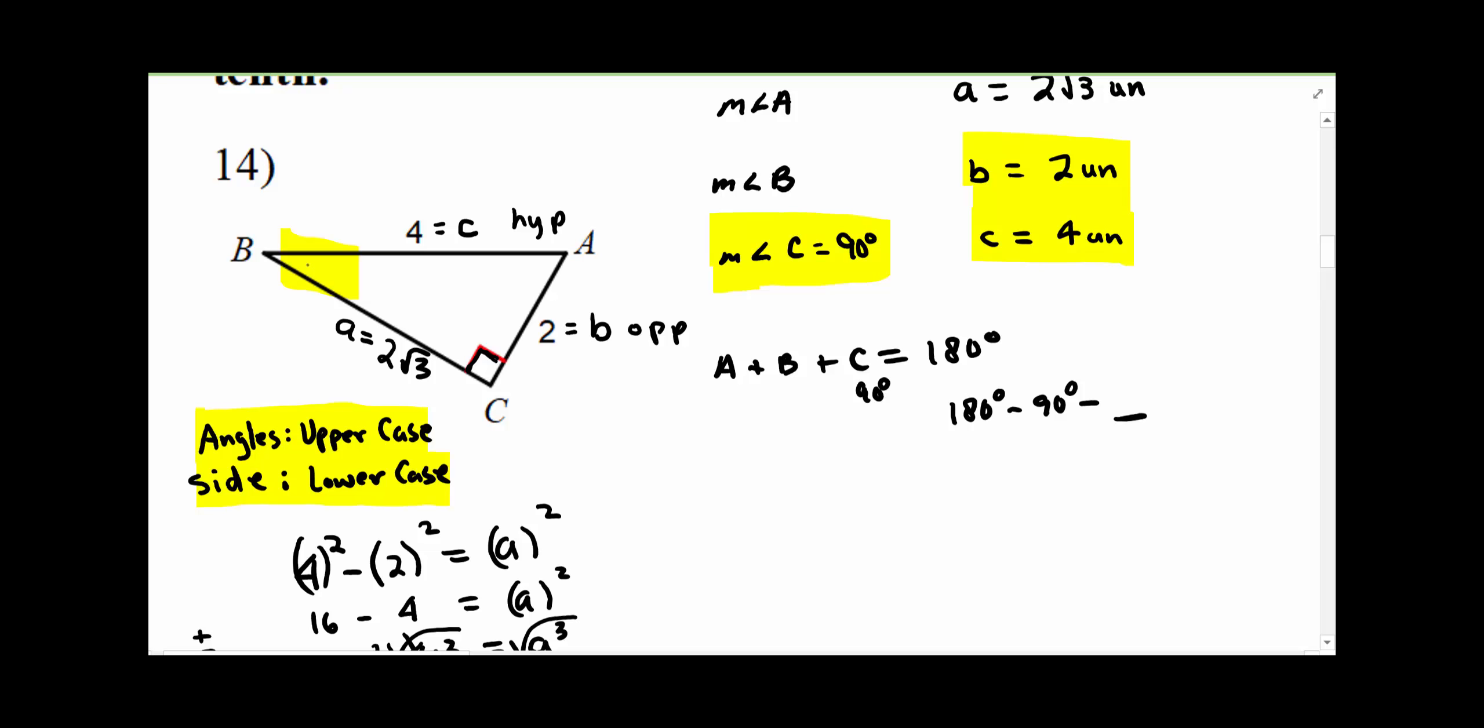From the perspective of angle B right here, this side is opposite. This side is hypotenuse. So that's the sine.